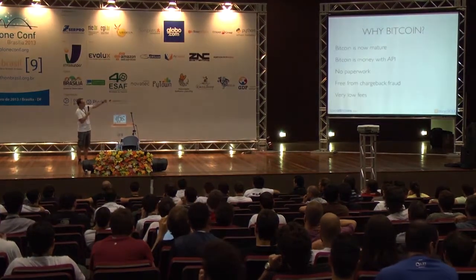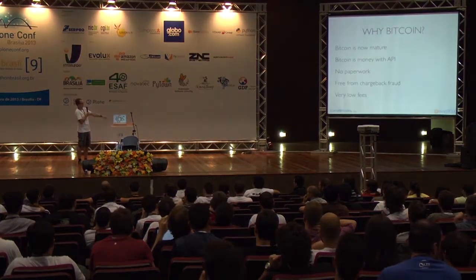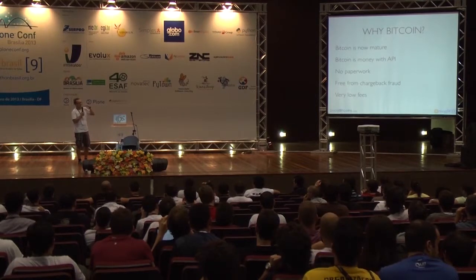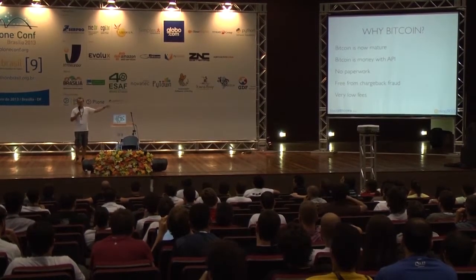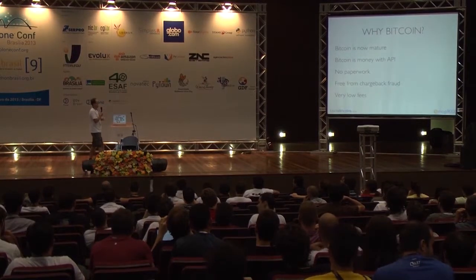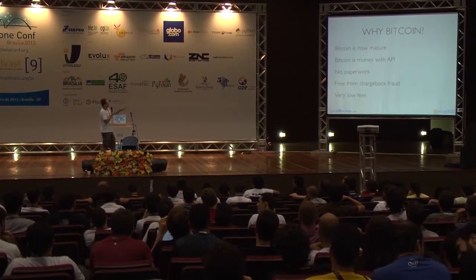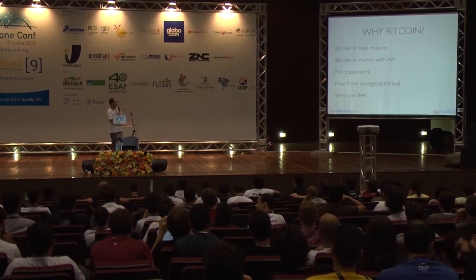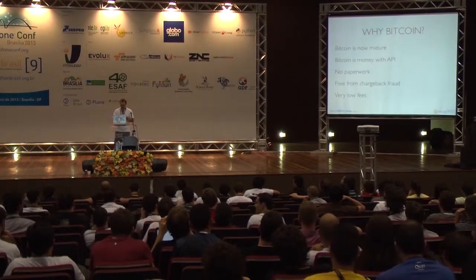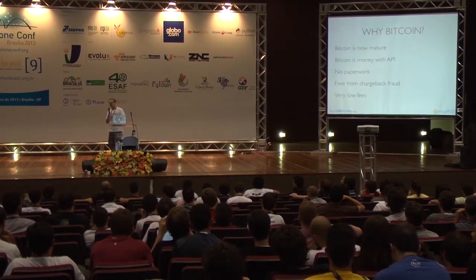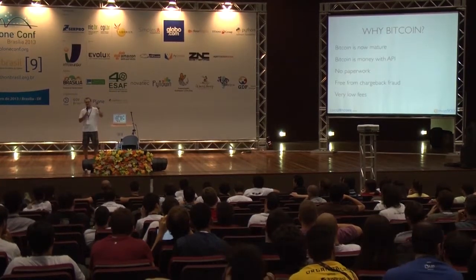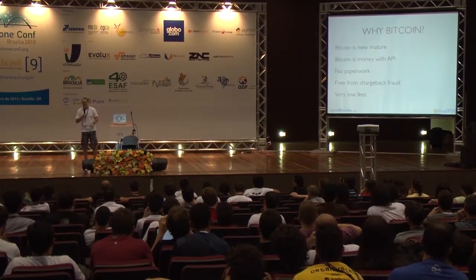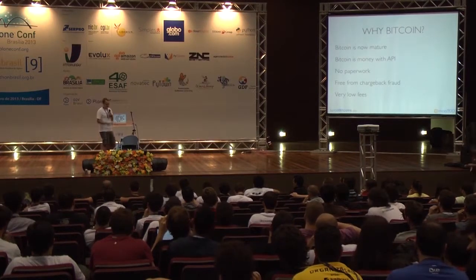Bitcoin is now major. Even if drug stores die, Bitcoin doesn't die. Bitcoin has an API. You can do payments from your Unix shell. You don't need to do paperwork or any kind of contracts with Bitcoin. You don't have any kind of issues with the bad guys, and it doesn't have transaction fees, or they are very low. That's why if you are building your own little service where you want to take payments, Bitcoin is the best way because it scales down, and it's very easy to set up.